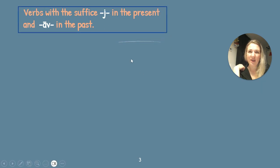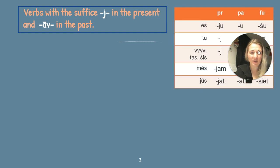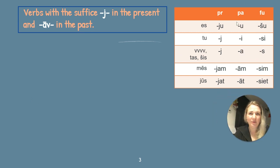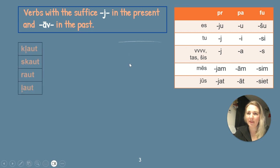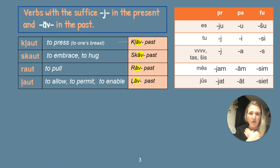As I mentioned, we have a J in the present tense, and what's also very important is the -av- in the past forms. That's how we can recognize these four verbs — in the past we use -av-. Klaut means to press — you push something close to you. It could be a person or a thing, but one person does that action.